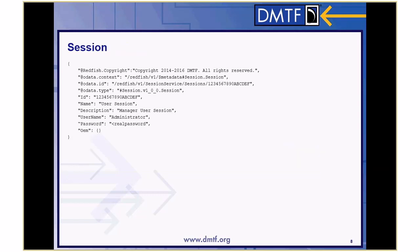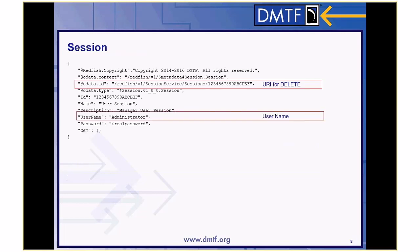The individual session itself again has those common properties up front. Username and password are shown — username will probably be there, but password is only present on POST. You're never going to read it back. If you do a GET, the semantics inside the schema require that the password not be returned. So never return a password on a GET.